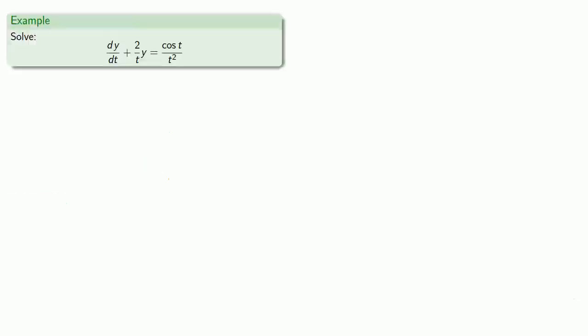For example, let's try to solve this differential equation. First, we solve the homogeneous equation. We'll drop the term that doesn't include the variable y, and so that's going to give us dy/dt + 2y/t = 0.